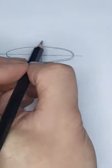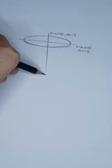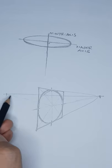When drawn correctly, the ellipse has two lines of symmetry, the major and the minor axes. The minor axis is always 90 degrees to the surface that the circle is on. In perspective, it also points to a vanishing point.